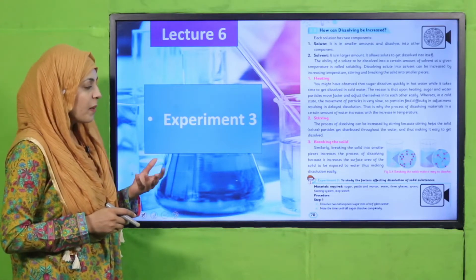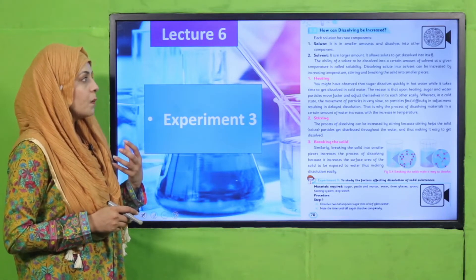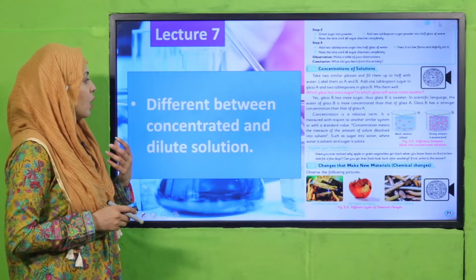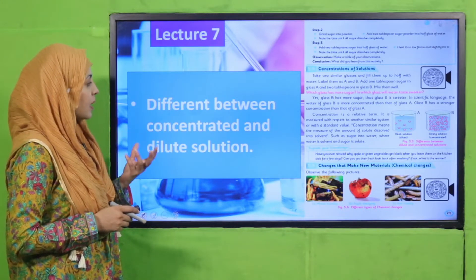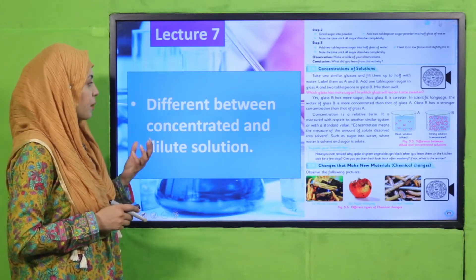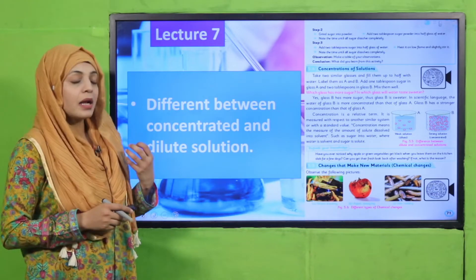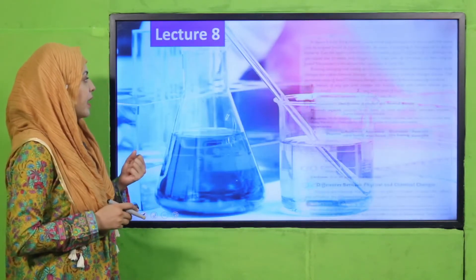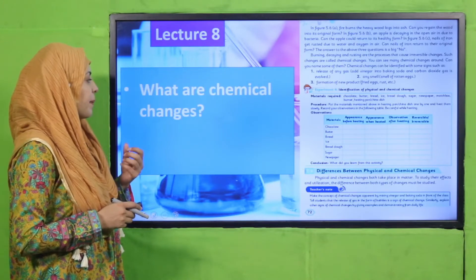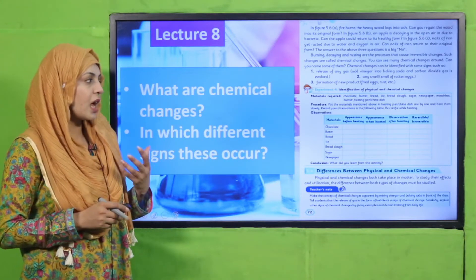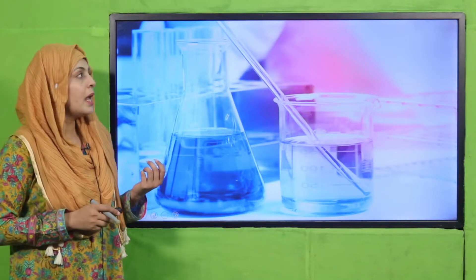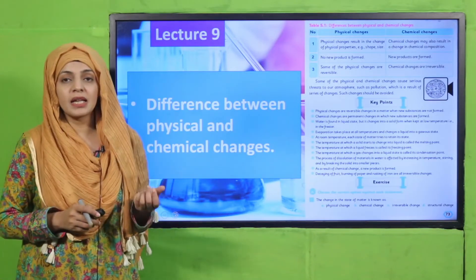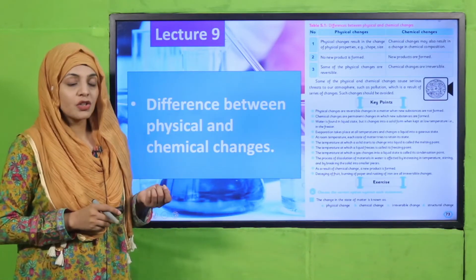In lecture number six, we did an experiment. In lecture number seven, we differentiated between concentrated and dilute solutions. In lecture number eight, we discussed what chemical changes and physical changes are and how they occur. In lecture number nine, we differentiated between physical and chemical changes.